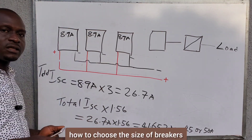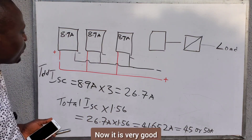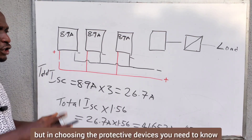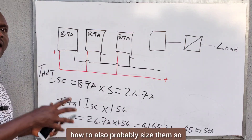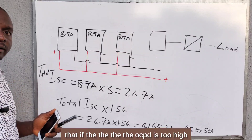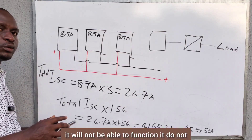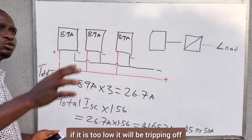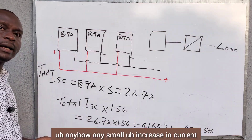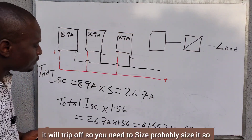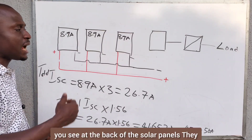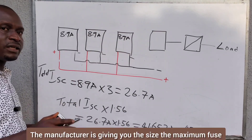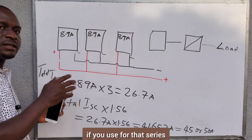So this is how to choose the size of breakers you need for your solar installation. It is very important to protect your system after installation. In choosing the protective devices, you need to properly size them — if the OCPD is too high, it will not trip when it's supposed to because its rating is higher than the current. If it is too low, it will trip off with any small increase in current. So you need to properly size it so that it matches. Some solar panels have written on the back the maximum series fuse rating — the manufacturer is giving you the maximum fuse size you should use for that series connection.